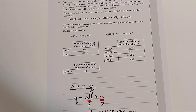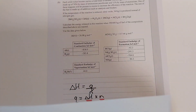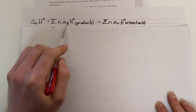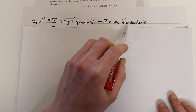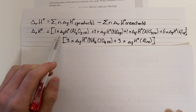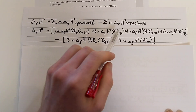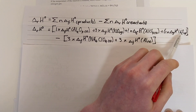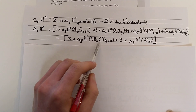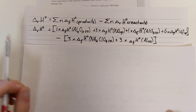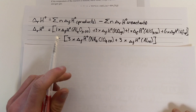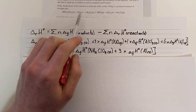That equation looks something like this: the enthalpy change of a reaction is equal to the sum of the enthalpies of formation of your products minus the sum of the enthalpies of your reactants. So I've plugged in the enthalpies of formation for all of my products — aluminium oxide, nitrogen monoxide, aluminium chloride, and water — and subtracted from that the enthalpies of formation for our two reactants, ammonium perchlorate and aluminium. You need to multiply by the stoichiometric coefficient in the equation for each component as well.